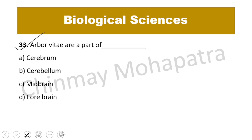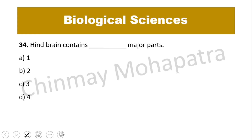Question number 33: Arbor vitae are a part of — the right answer is the cerebellum. The cerebellum is a balancing organ and the second largest part of our brain. Question 34: The hindbrain contains how many major parts? The right answer is C — three parts.